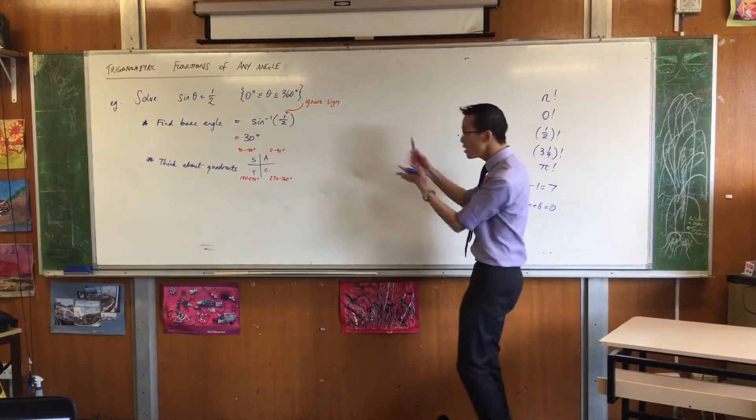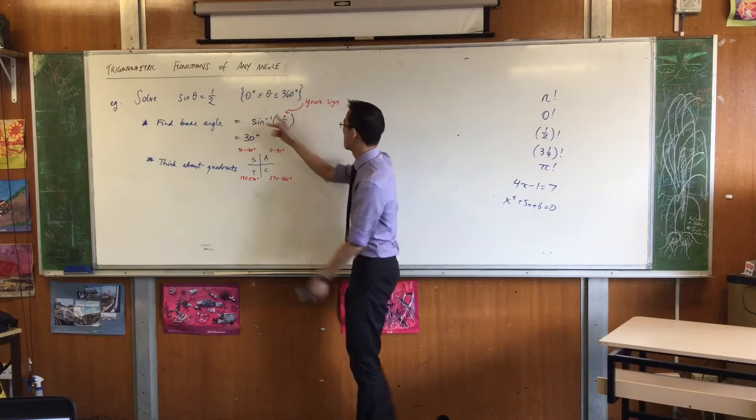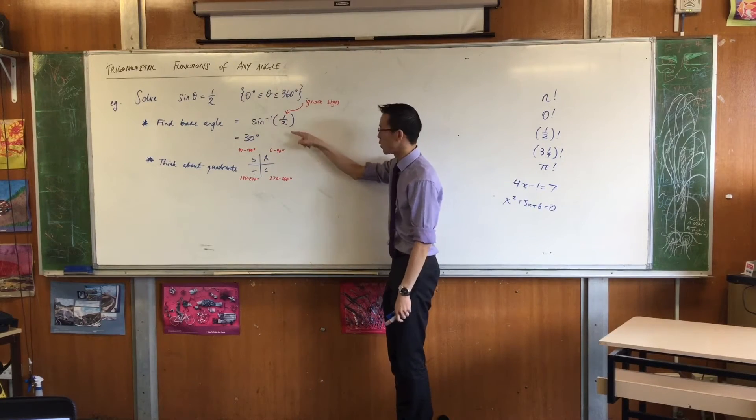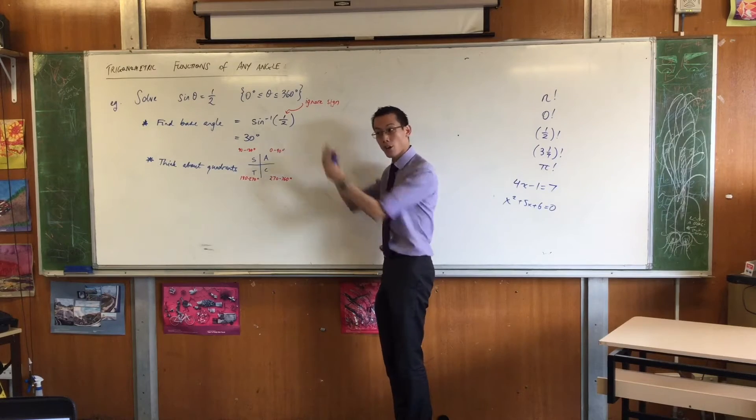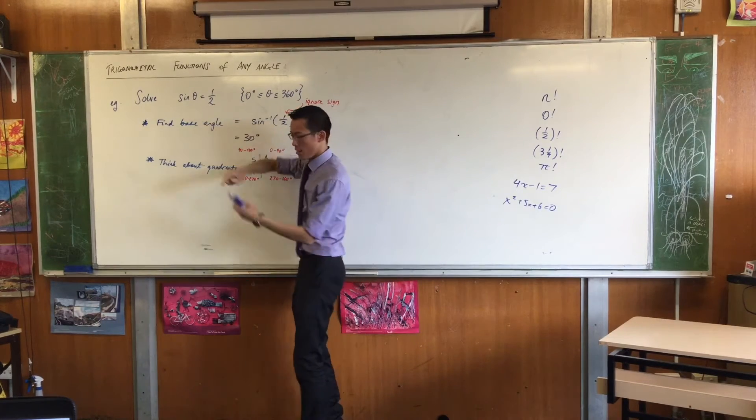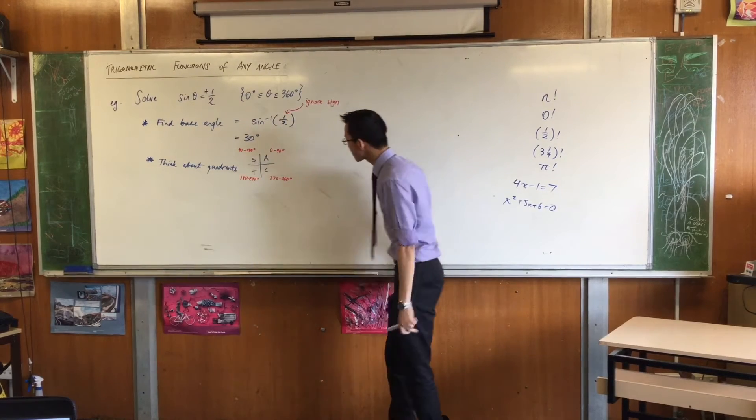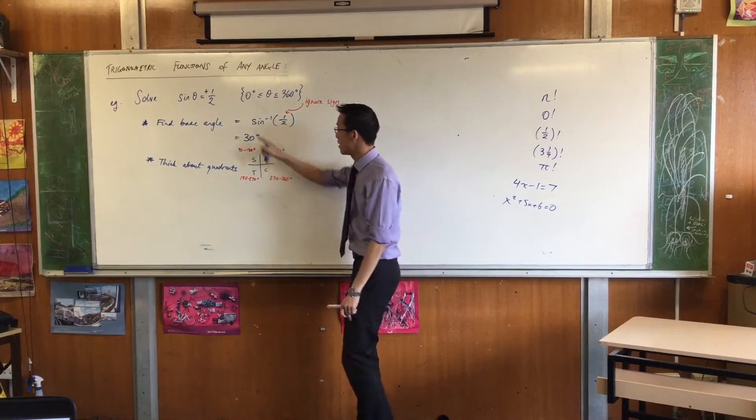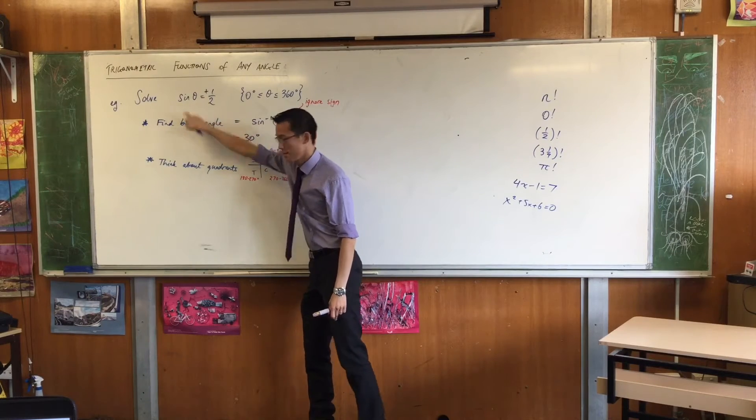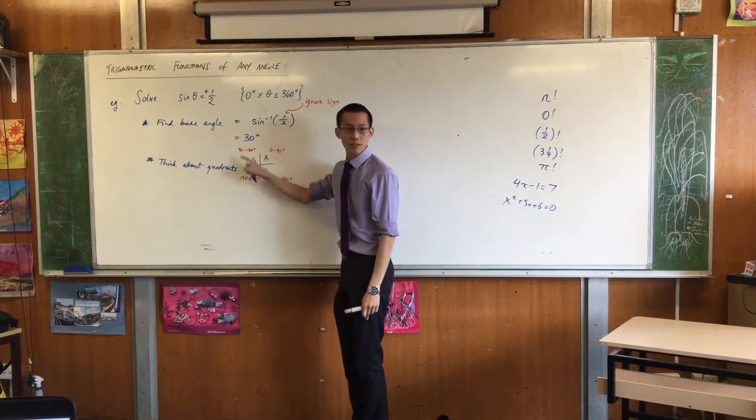So in thinking about these quadrants, I then return to the original question. Remember I ignored the sign when I was working this thing out. Now I go back to the sign. The sign here is positive, right? So because it's positive, I'm going to be in the first and second quadrants. Do you see that?